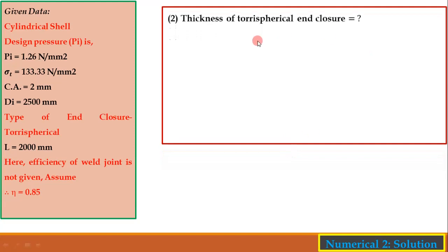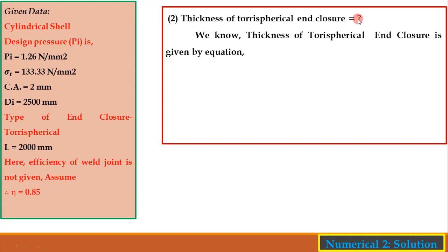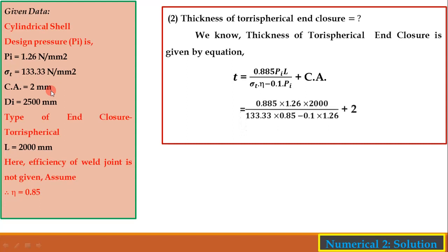Part 2 — Thickness of torispherical enclosure using t = (0.885 × pi × L) / (sigma_t × eta − 0.1 × pi) + CA. Substituting pi = 1.26 N/mm², L = 2000 mm, sigma_t = 133.33 N/mm², eta = 0.85, CA = 2 mm — the thickness of the torispherical enclosure is 21.70 mm.